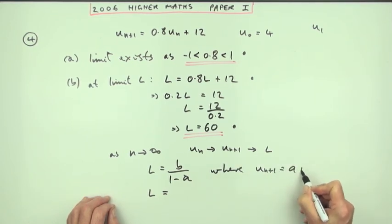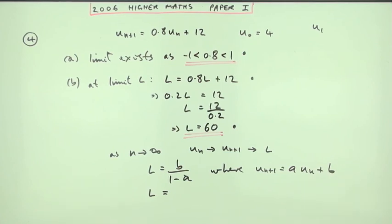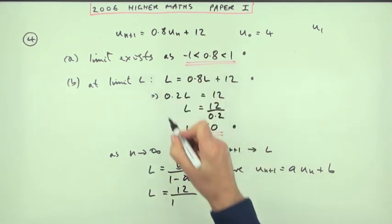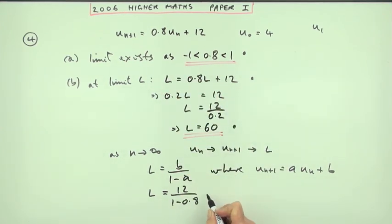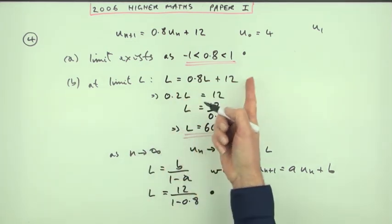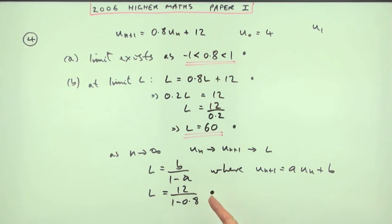Where Un plus 1 equals a Un plus b. And then you can say when b, that means b is 12 and a is the 0.8. So you don't have to put this part down. That gets you a mark using the formula. I almost think that's better because it shows an understanding of how a limit exists. And that certainly is the primary method they're looking for. Formula, figures, you don't get a mark until you get the figures. Then as before just carry out that calculation. L will be same as before, 12 divided by 0.2, which has to be 60 for the second mark.